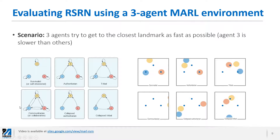On the other hand, we have a communitarian or fully collaborative society where all agents care about each other. And we have other networks in between — for example, an authoritarian network where two agents care about one specific agent, in this case agent number three.